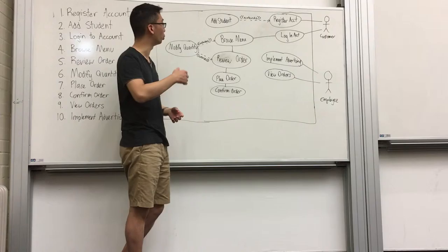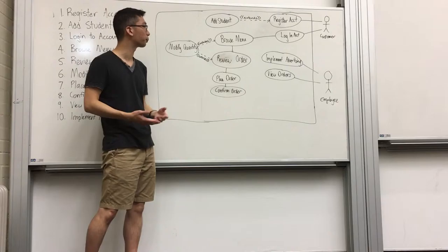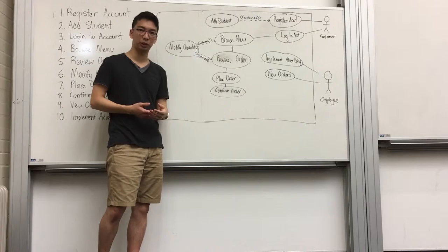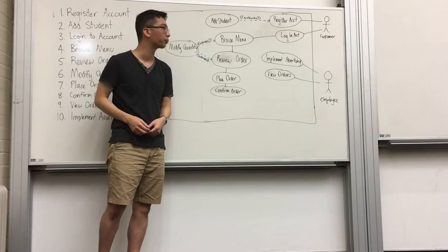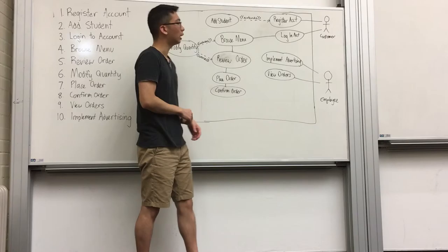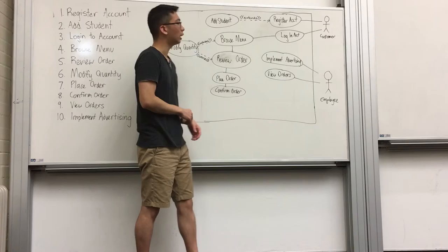And then following here, we have the review order, which gives customers an opportunity to finalize everything and then finally place and confirm the order. And here we have the employee, which refers to the SSPS staff. You can see that they have the implement advertising and review orders functional requirements. This overall summarizes our 10 functional requirements for the SSPS lunch ordering system. Thank you.